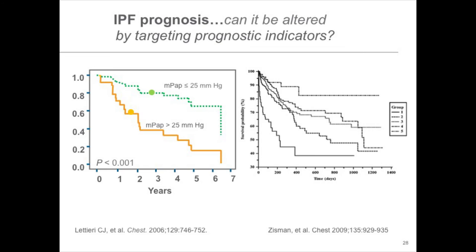If you treat something that's only associated with worse survival, can you affect outcomes? Here are two hypothetical patients — Mr. Orange Dot and Mr. Green Dot. The question is: can we keep Mr. Green Dot on the green line and bring Mr. Orange up to the green line and affect his prognosis? It sounds very attractive, seductively appealing. But here's a word of caution: a study looked at serum albumin as an indicator of outcomes in IPF, showing that patients with the lowest serum albumins have the worst outcomes. I don't think anyone believes that giving IV albumin infusions is going to affect the outcome of patients with IPF.